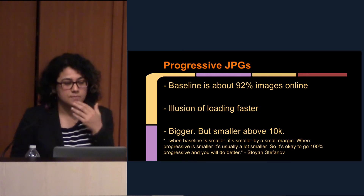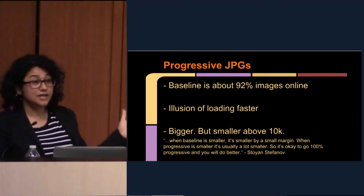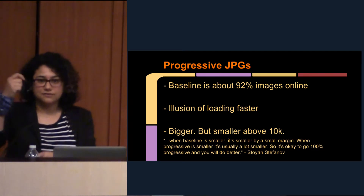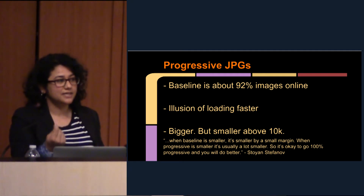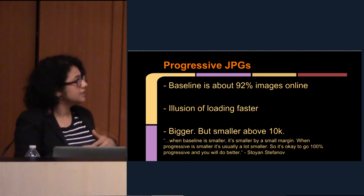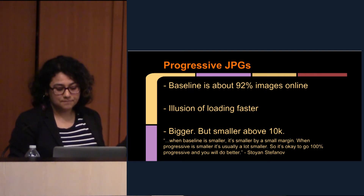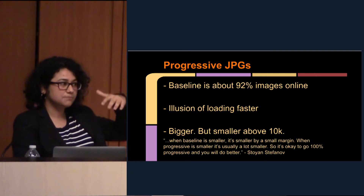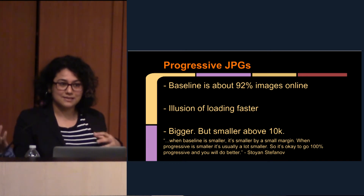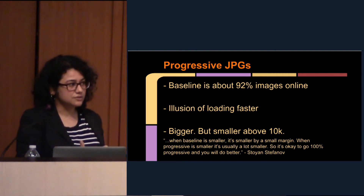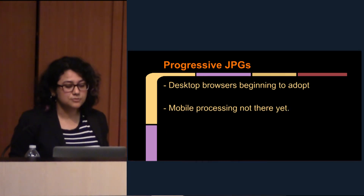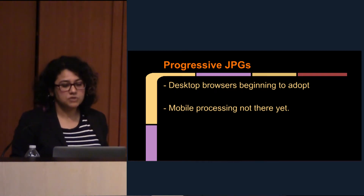Progressive JPEGs have been talked about a lot. It's almost like going back to the old days of the internet, but it's great because as a user you see something and you're not left with a blank image. Progressive JPEGs basically means that instead of saving your JPEG as a normal JPEG, you save it as a progressive JPEG in Photoshop or whatever tool you use. It's a little bigger than your baseline JPEG. But as Stoyan Stefanov says, if your file size is above 10K, the difference isn't that big. He also says that because the progressive JPEG is only slightly larger than baseline, you're almost always better off giving the user the illusion of having content there instead of the content jumping when the image finishes loading. Desktop browser support is there, especially with Chrome. Mobile, we're not there yet — wait a bit.